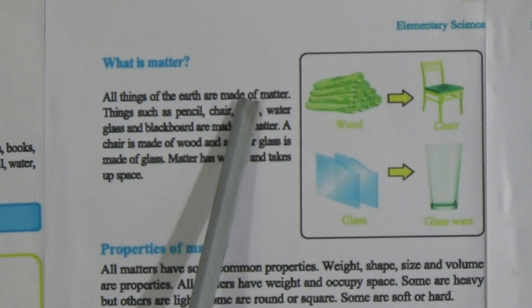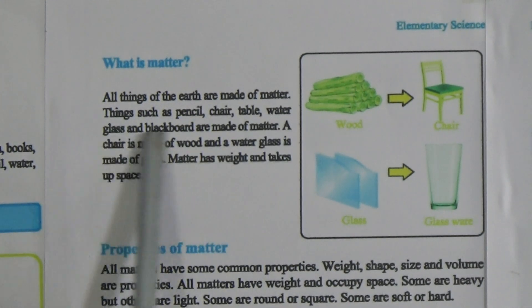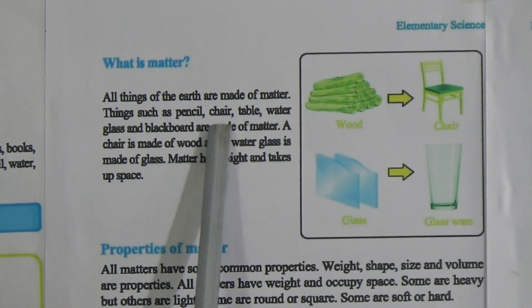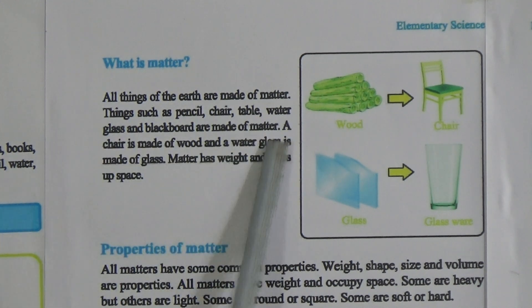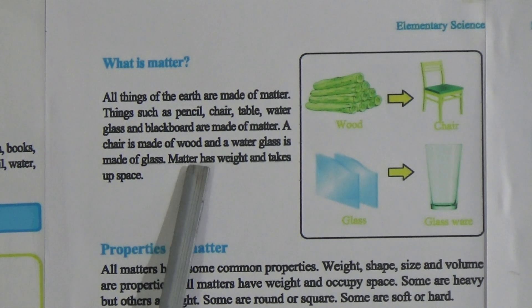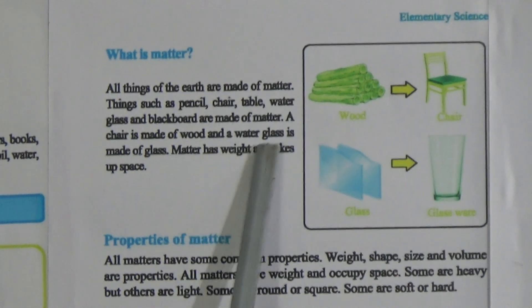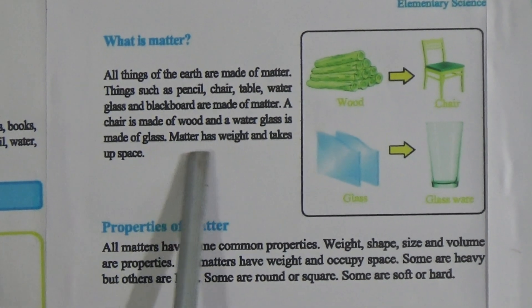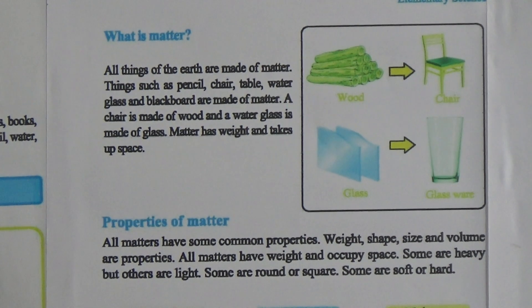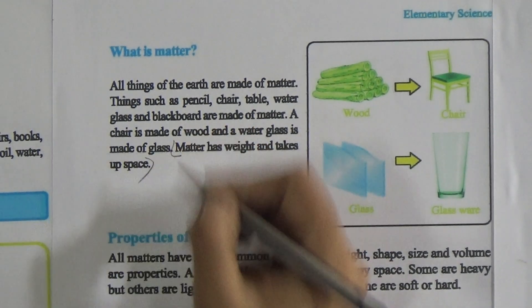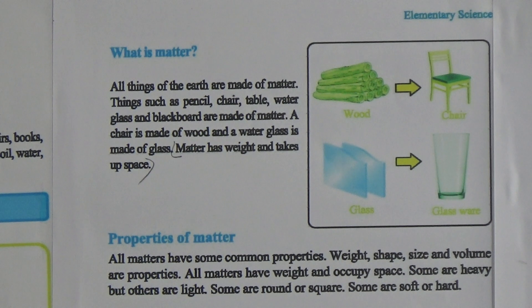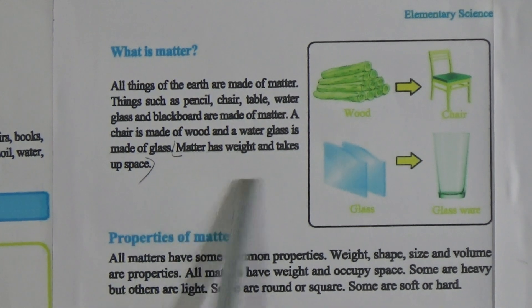What is matter? All things on Earth are made of matter. Things such as pencil, chair, table, water, glass, and blackboard are made of matter. A chair is made of wood, and a water glass is made of glass. Matter has weight and takes up space — this is the definition of matter.